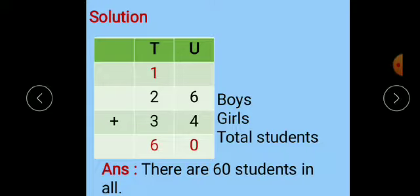For that, the solution is: first number is 26, 26 is boys, plus 34, 34 is girls. We start addition from the units place. So 6 plus 4 is 10, so write 0 here, 1 is carrying over to the tens place. After that, 2 plus 3 is 5, and 5 plus this 1 is 6. So the answer is 60.